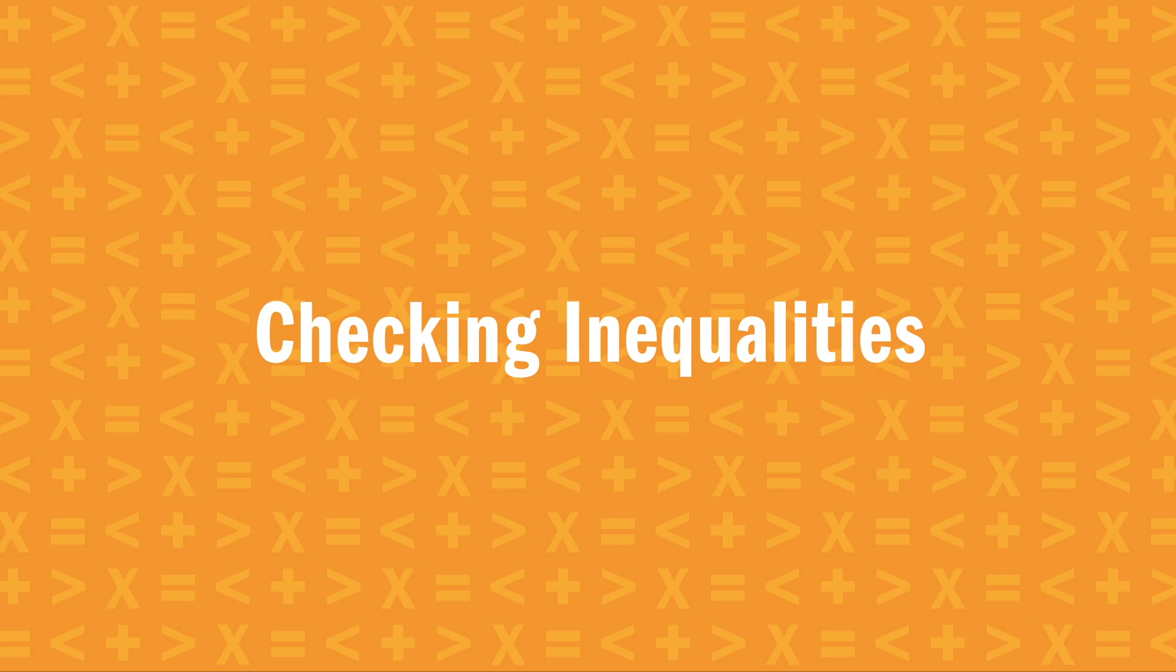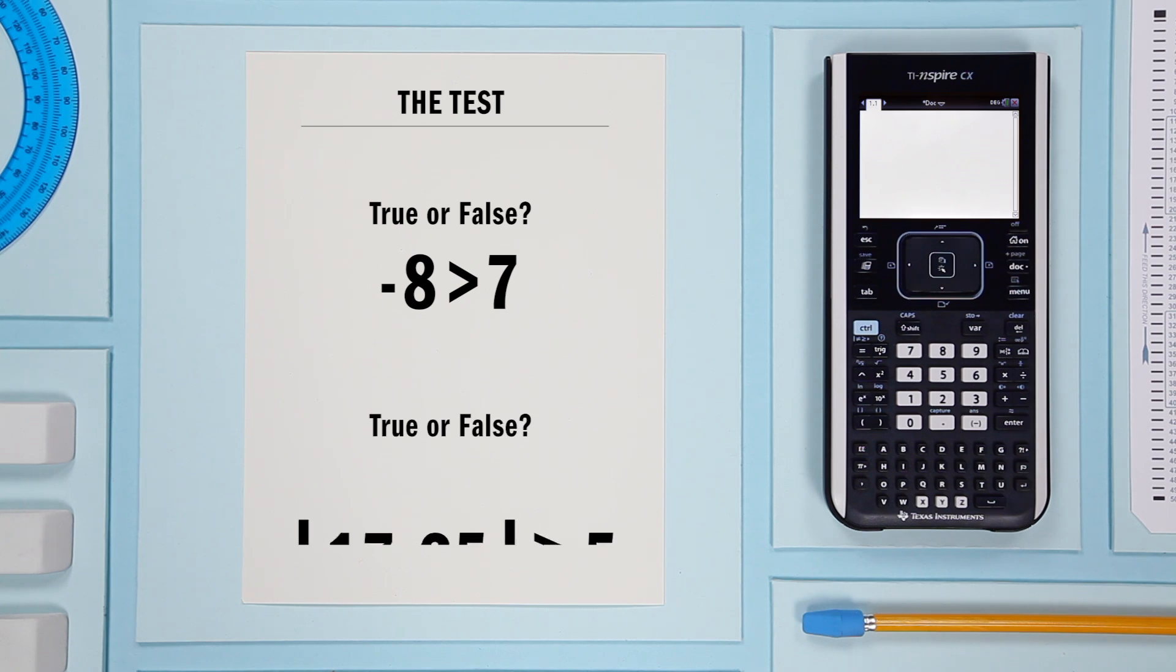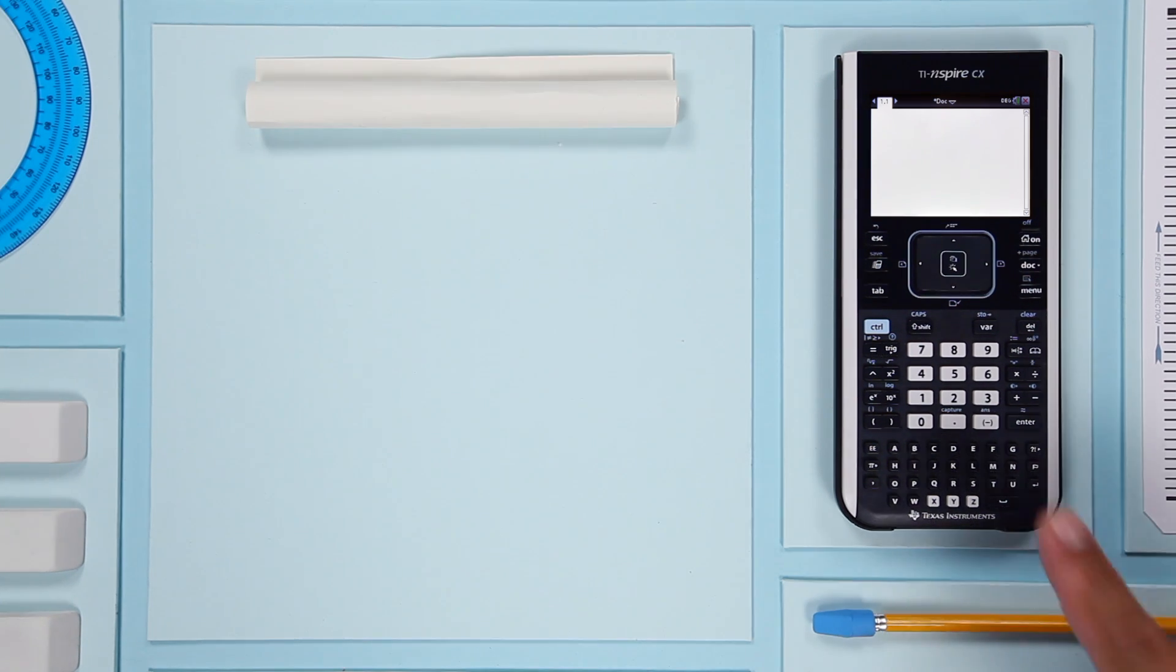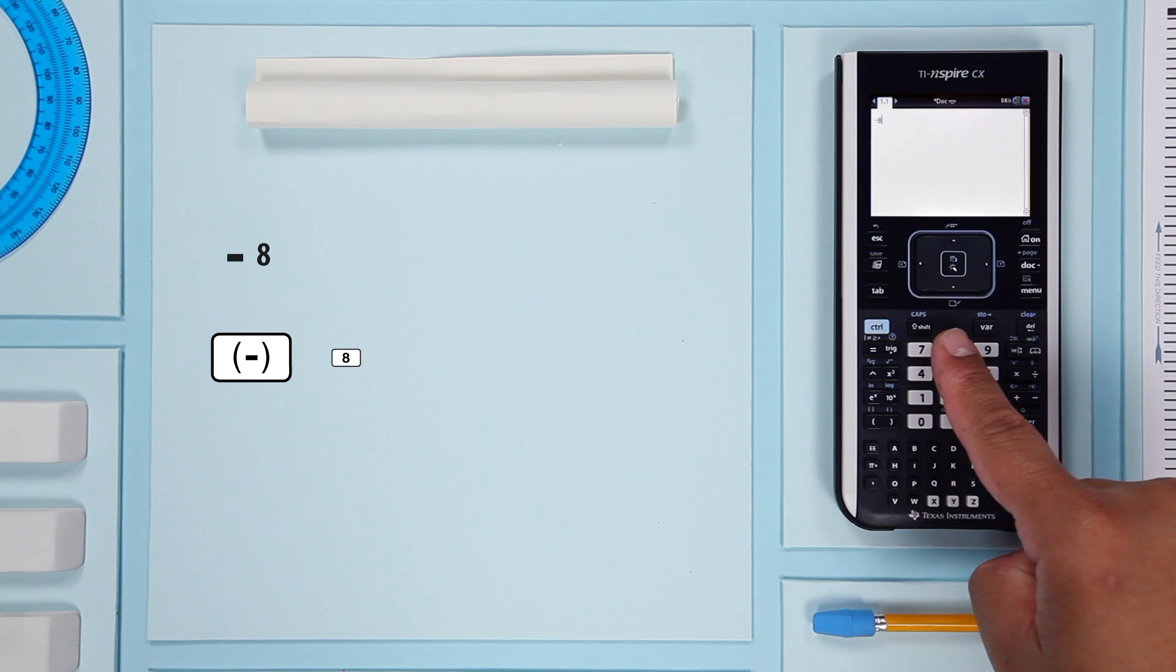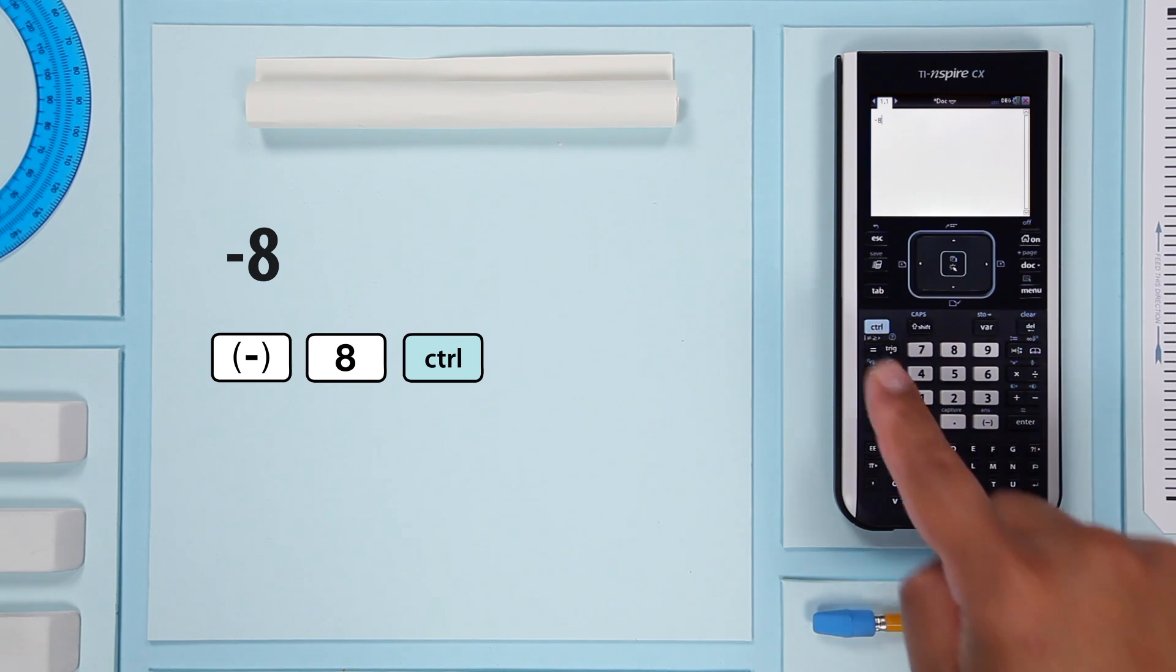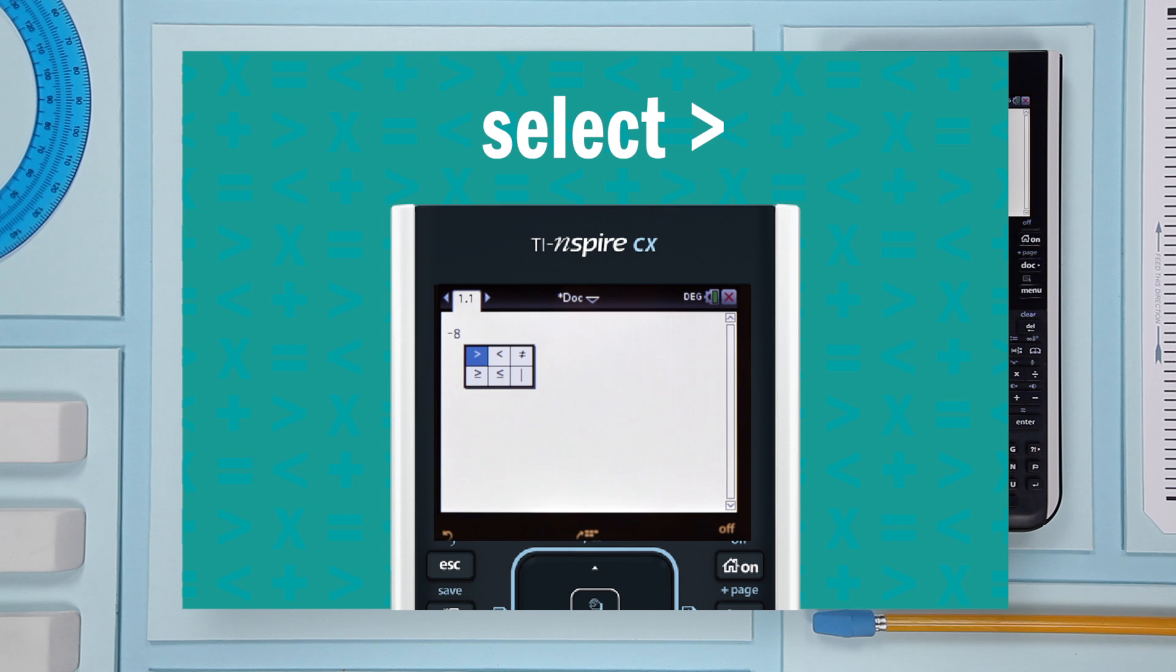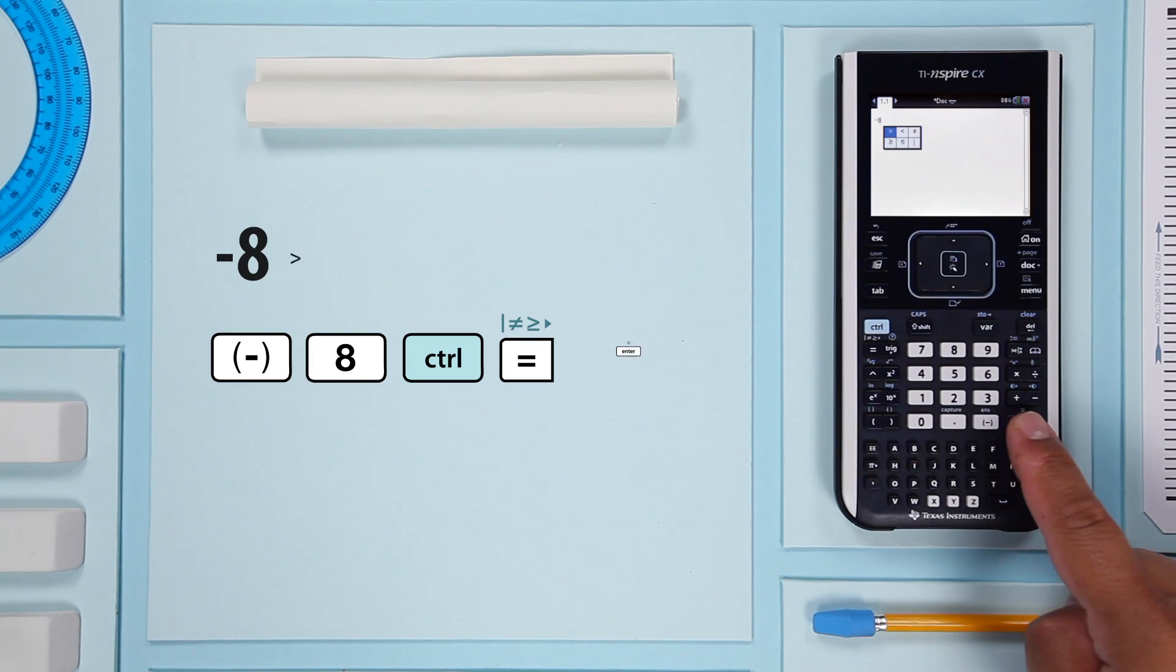You can also use the test feature to check inequality statements. Let's start with a simple one. Enter negative 8. Now press control and equals. This opens a menu where you can select the greater than symbol.